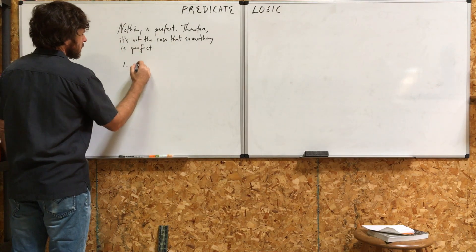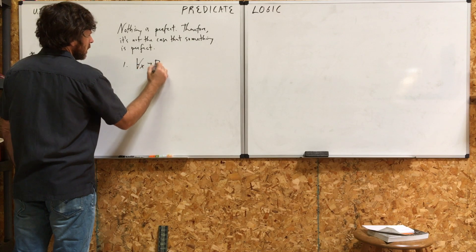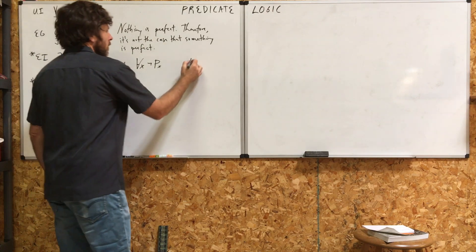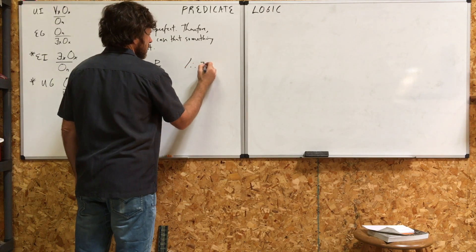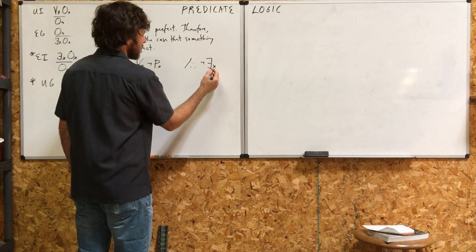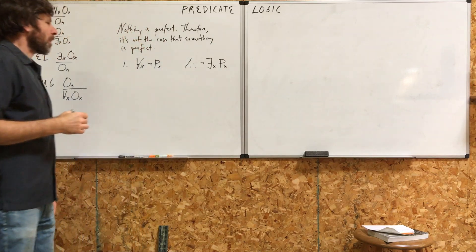Premise one, there's only one premise here. For all x, it's not p. The conclusion is, it's not the case that something, it's false that for some x, x is p.